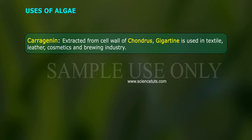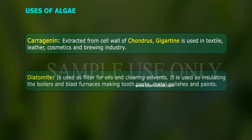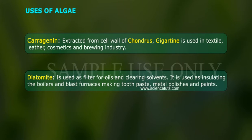Carrageenan, extracted from the cell wall of Chondrus, and Fucoidan are used in textile, leather, cosmetics and brewing industries. Diatomite is used as a filter for oils and clearing solvents, and for insulating boilers and blast furnaces, making toothpaste, metal polishes and paints.